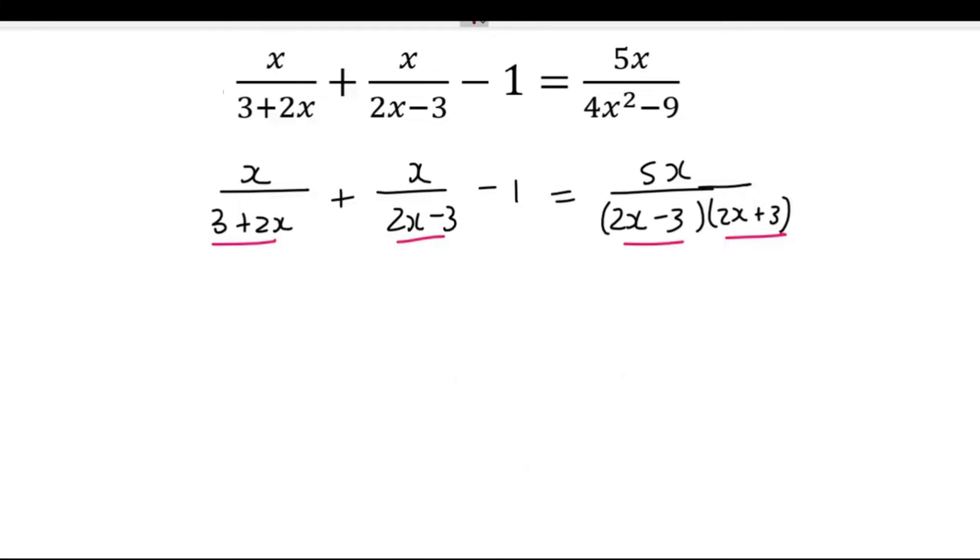Then we've got a 2x minus 3 and a 2x minus 3, so those are the same. So our lowest common denominator is just going to be 2x minus 3 and 2x plus 3.